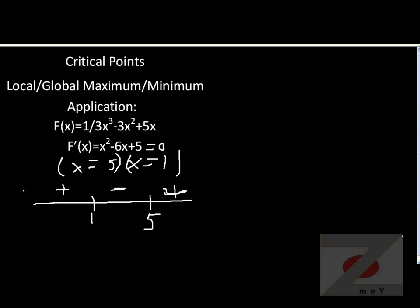How to interpret this? The basic idea here is to left of 1, slope is positive. That means the function is increasing up to 1.